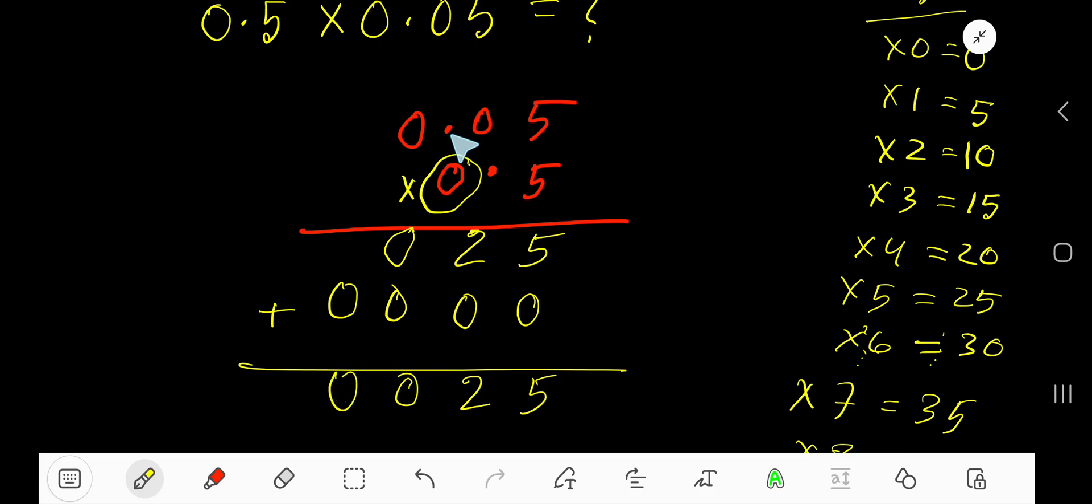Now place the decimal. After the decimal we have one digit, two digits here—one. Total you have three digits. So one, two, three. Yeah, so 0.025 is our answer.